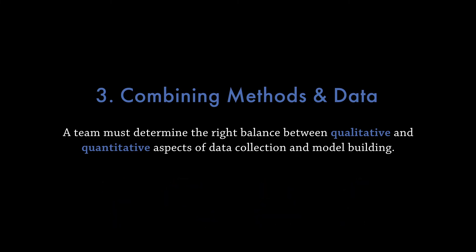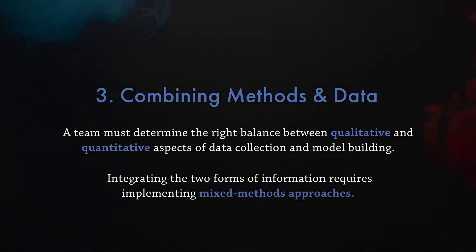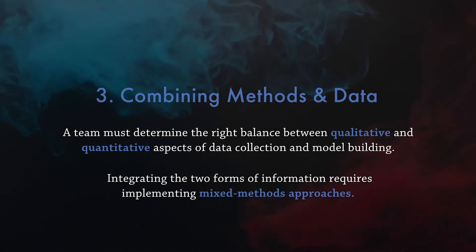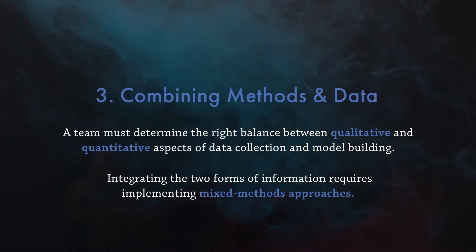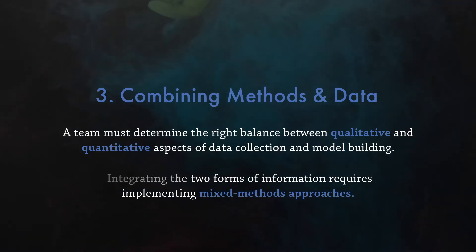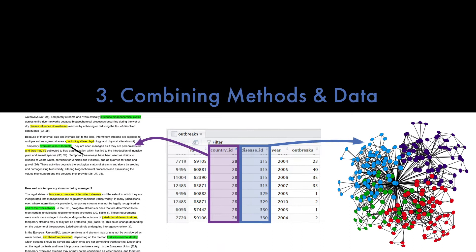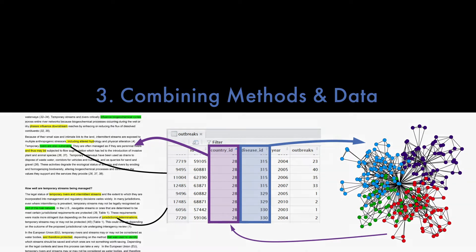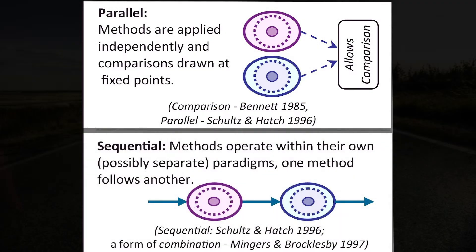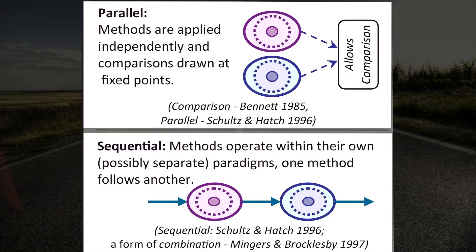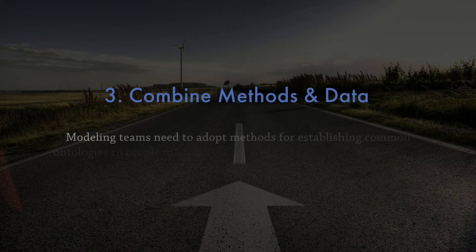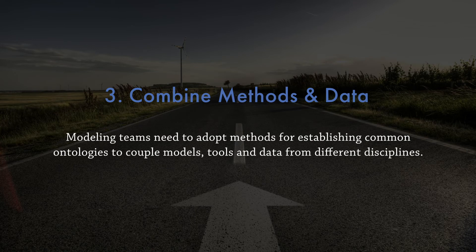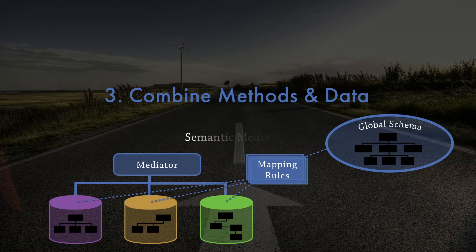There is also the pragmatic aspect around time and resources. The second issue is related to integrating two forms of information, which requires implementing what we call a mixed methods approach. However, we still don't have the guidance, standards, tools and methods for integrating data from diverse sources. Moving forward, we need to explore alternative designs for integrating data — for example, parallel versus sequential designs — and use different approaches for comparing information from stakeholder interviews with model results. Additionally, modeling teams need to adopt methods for establishing common ontologies to couple models, tools and data from different disciplines. This is called semantic mediation.